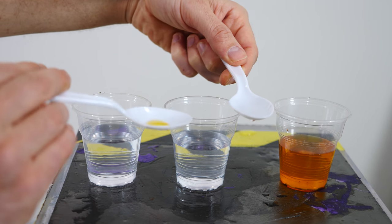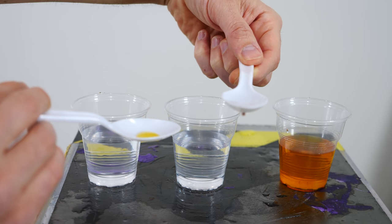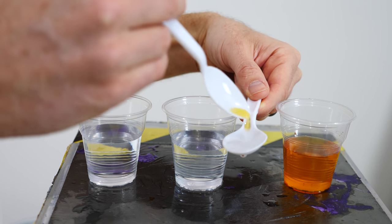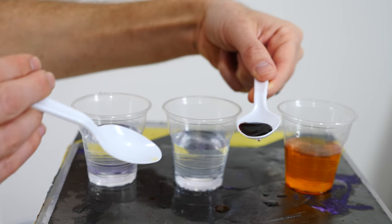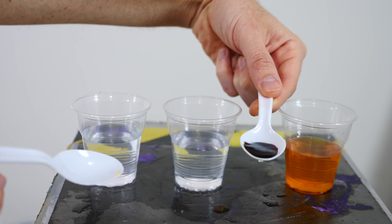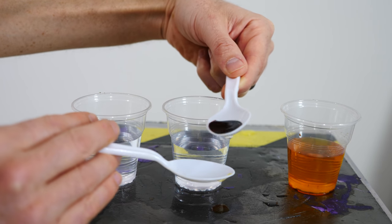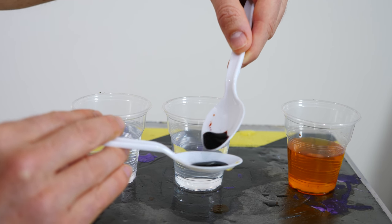So the ferric chloride already has a slight orangish color, but nothing like what you're going to see after this. Look at that.